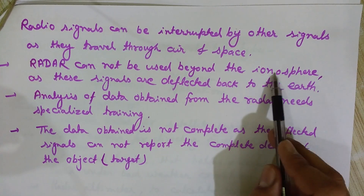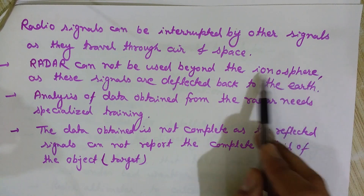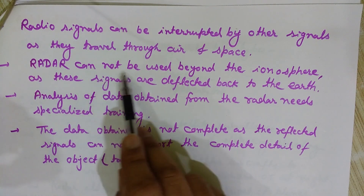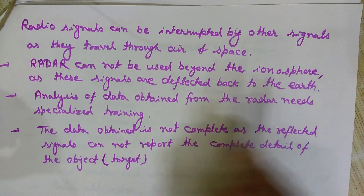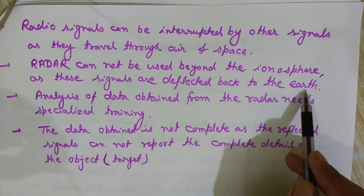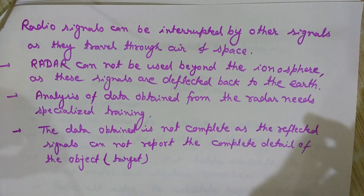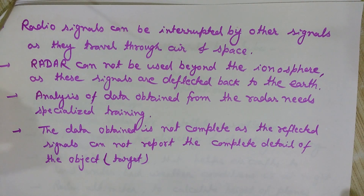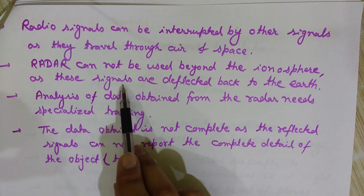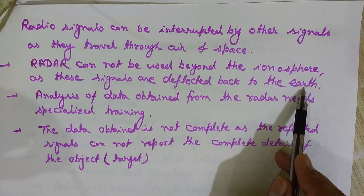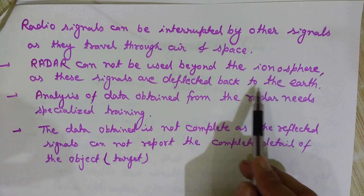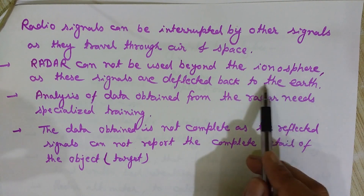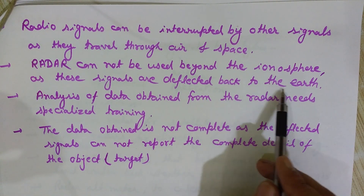Radar cannot be used beyond the ionosphere, which is a layer of the atmosphere around the earth containing ions. The signals are deflected back to the earth by the ionosphere, so if we want to detect any object above the ionosphere, the radar cannot be used properly, as the radio signals do not cross the ionosphere.